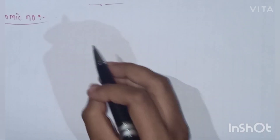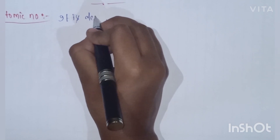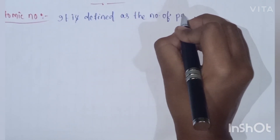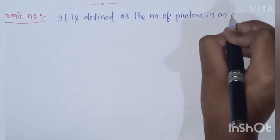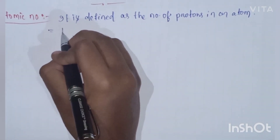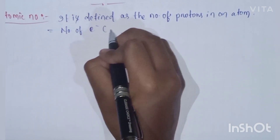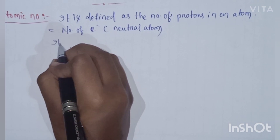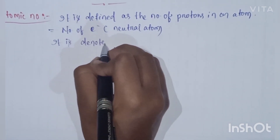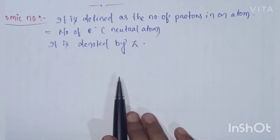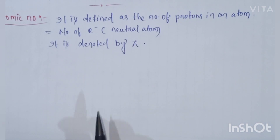Atomic number is defined as the number of protons in an atom. Moving on to mass number.